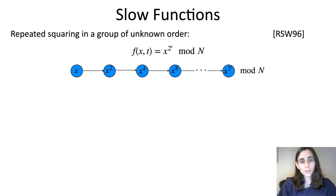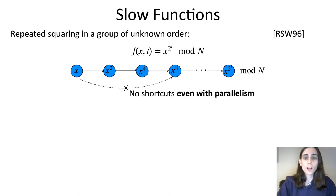The reason that this is conjectured to be a slow function is because it has this sequential nature. You can view it as a line where starting with x, you just repeatedly square x, t times until getting to x to the 2 to the t, and the assumption here is that this doesn't have any shortcuts. There's no way to speed up this computation other than going through every node in this chain. And in particular, this is believed to be true even if the adversary uses parallelism. Parallelism doesn't help you compute this. You still have to run for t steps.